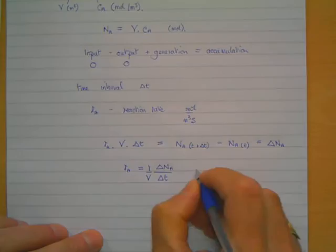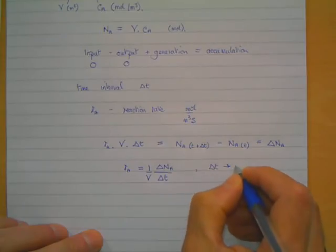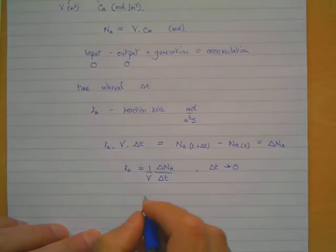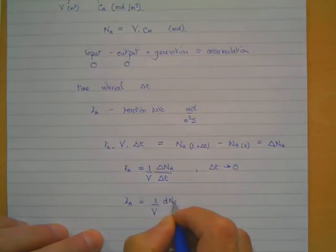Times dNA by dt, and as delta t tends to zero and becomes smaller and smaller, then you can replace that with the differential. So rA equals 1 over V times dNA by dt.